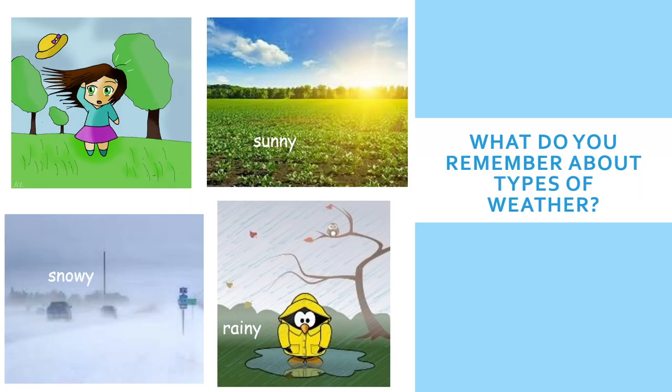Now let's look at different types of weather that we talked about last week. Point to the picture that shows windy. It is windy outside. I see her hat flying off her head. I see her hair blowing in the wind. And I see the trees bending and blowing in the wind.